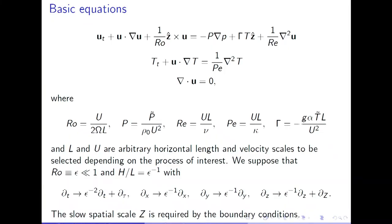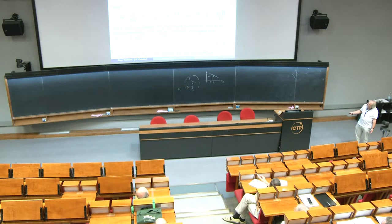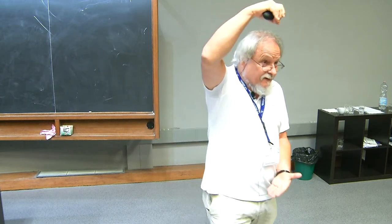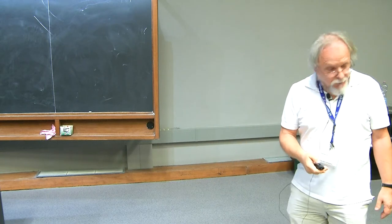I'm going to do an expansion in the Rossby number — I'll call it epsilon to remind me it's small. I need to link the horizontal length scale to the vertical length scale through some assumption depending on epsilon, and the one that actually works is H over L equals 1 over epsilon. This means the horizontal scale is epsilon times the vertical scale — exactly these columnar structures I showed you on the previous slides.